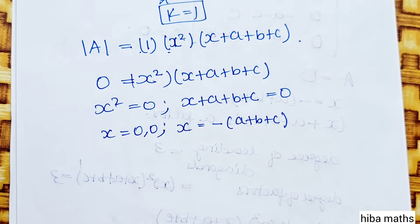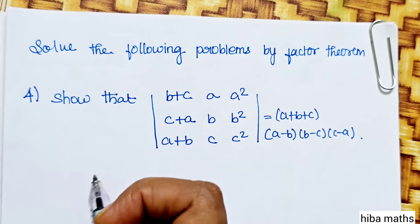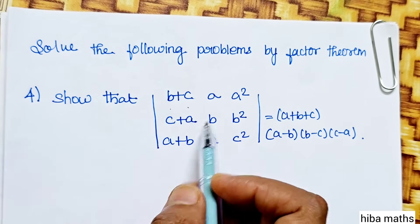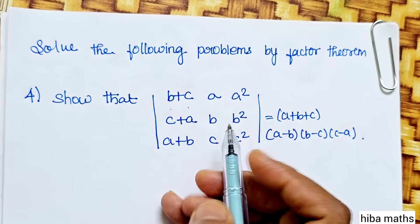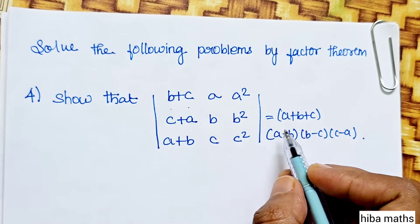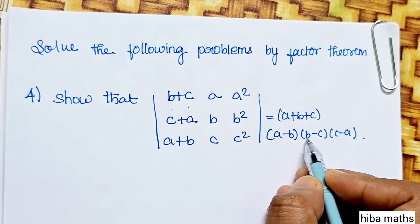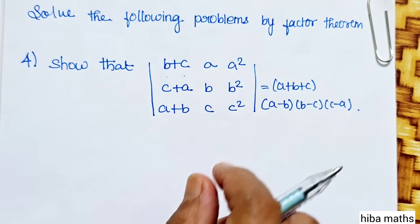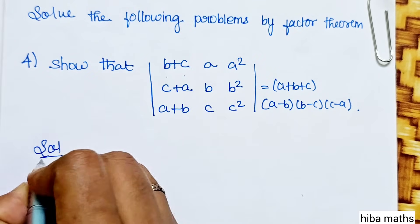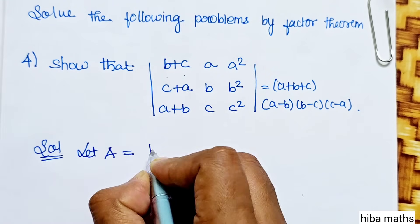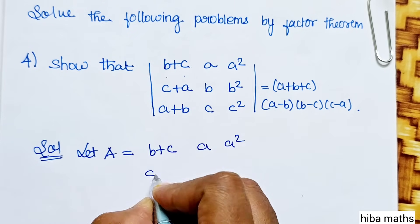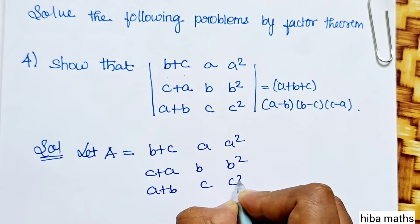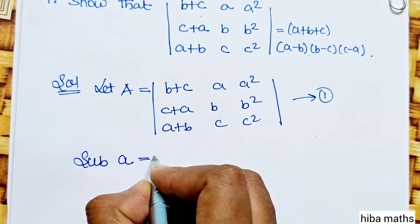Now solve the next problem using the Factor Theorem. Show that the determinant with entries b plus c, a, a squared; c plus a, b, b squared; a plus b, c, c squared equals a·b·c times a minus b, b minus c, and c minus a.